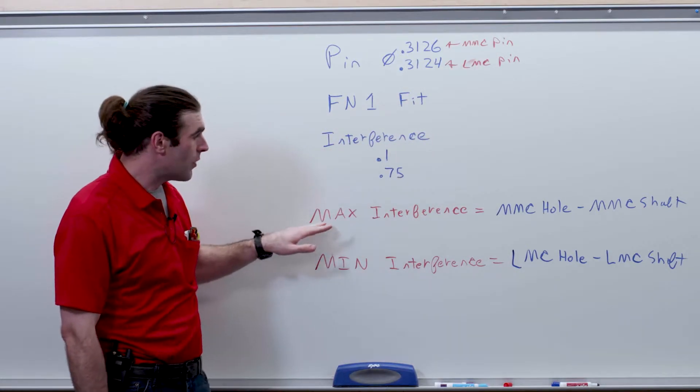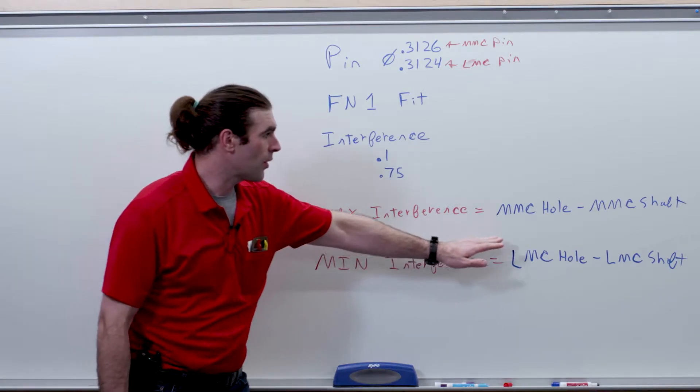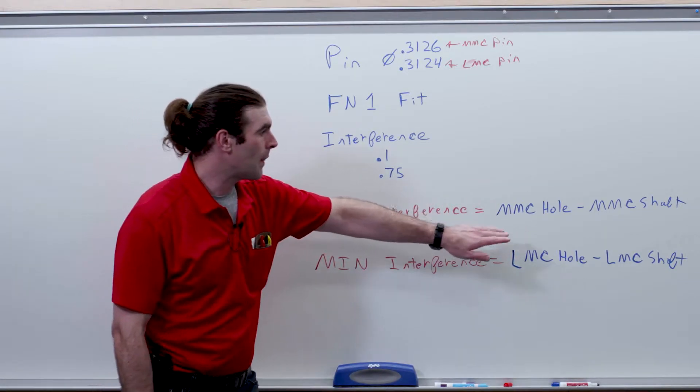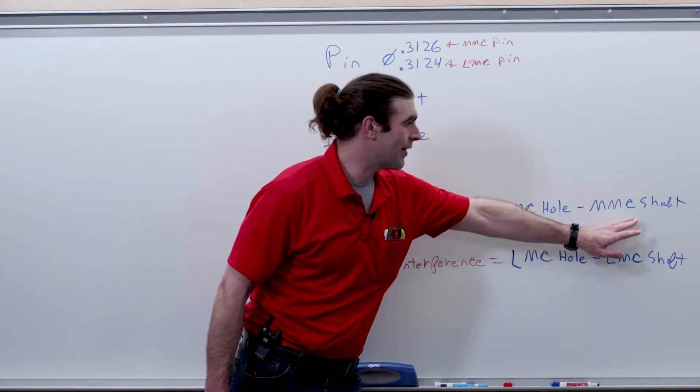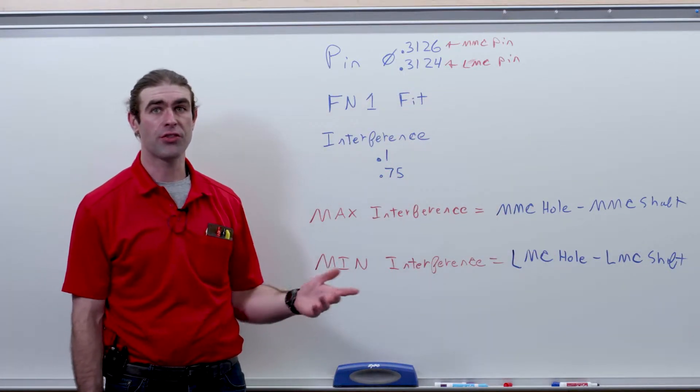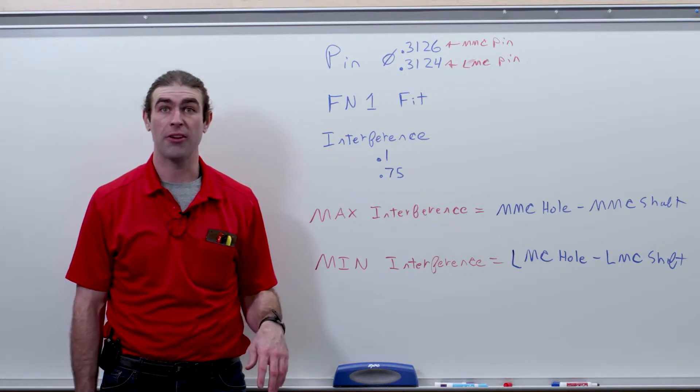So when we look at our equation, max interference, we need to find the MMC of the hole, but we know the max interference, and then the MMC of the shaft, and likewise with minimum interference.